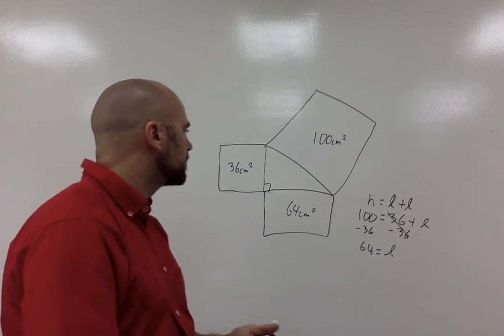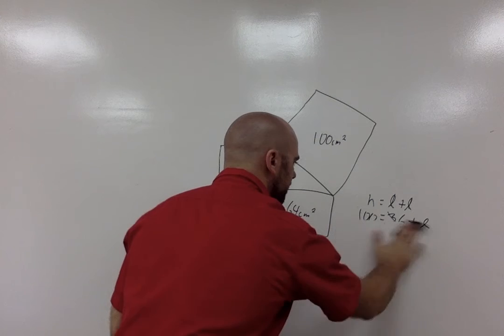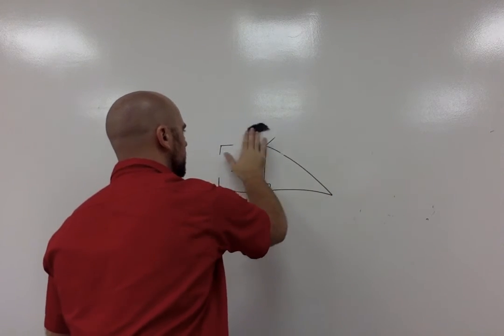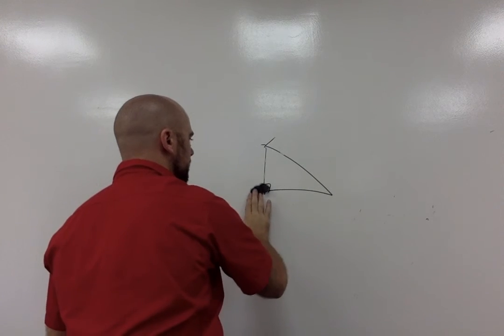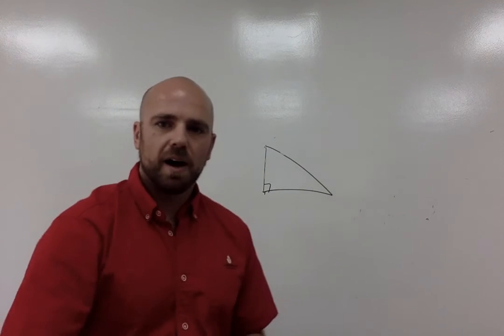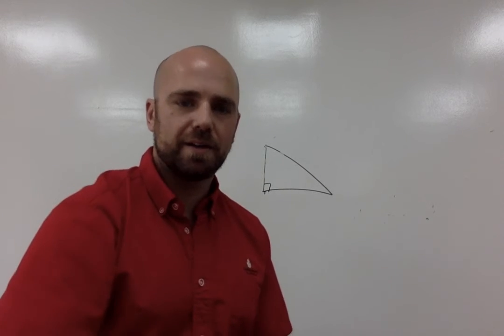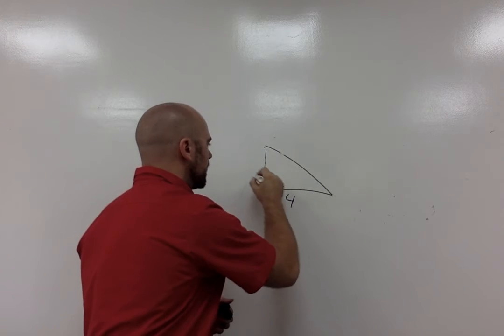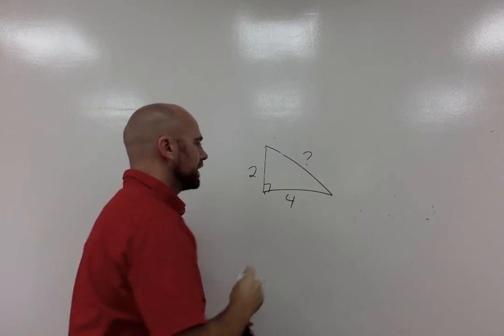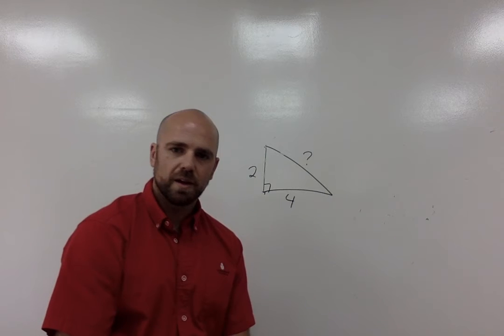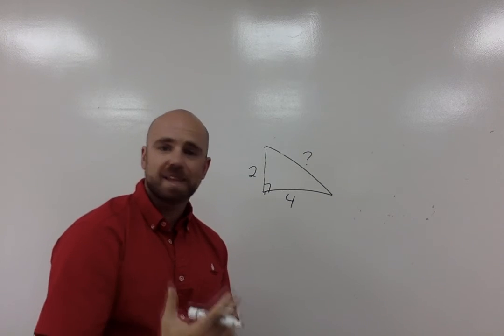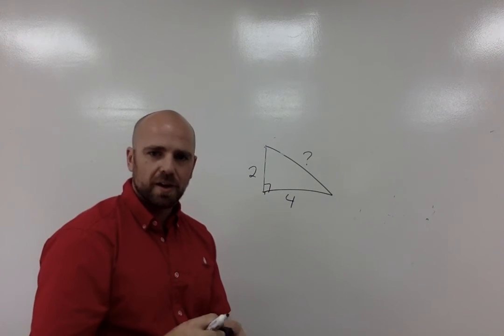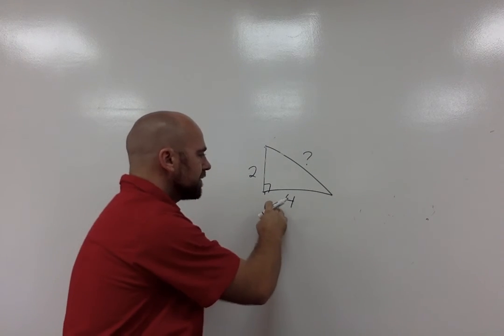What if you don't have the area? Let's say we have a similar triangle. Let's say that we have distances of 4 and 2, and then this one, we don't know. This is our side length. This isn't the area now. We can't just go 4 plus 2 equals 6. It doesn't work that way. We have to do, what is the area?